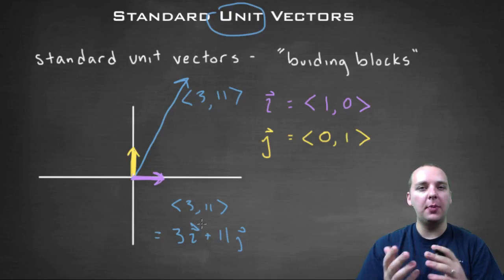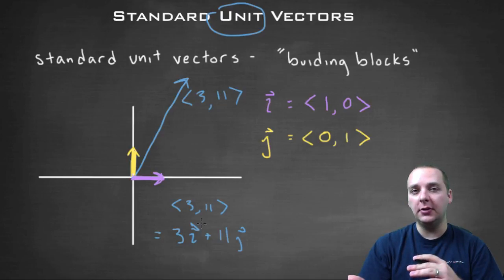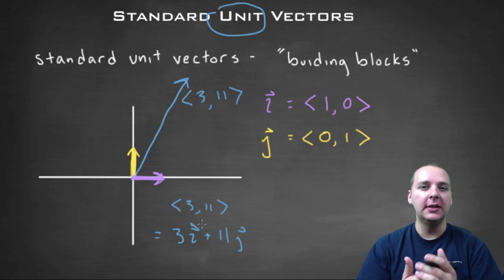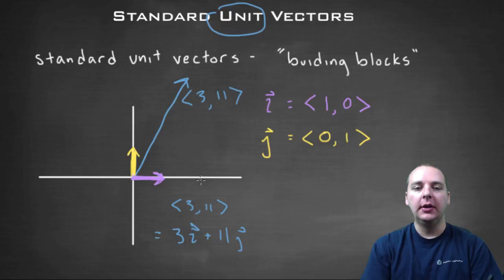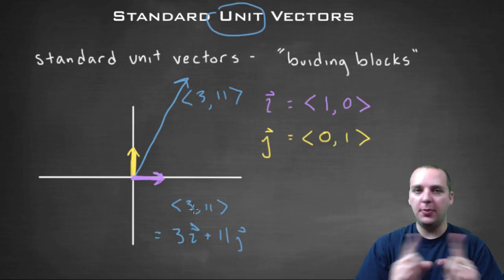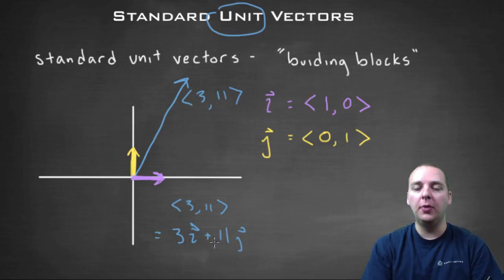Some situations we might prefer to use standard unit vectors, some situations we might prefer component form. It just depends. A lot of physics examples use standard unit vectors, but there's really no way that you have to write a vector. Just remember, you can easily go back and forth between component form and standard unit vectors by writing the first component with an i plus the second component with a j.